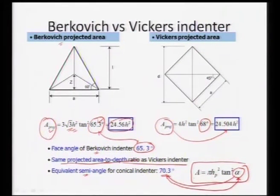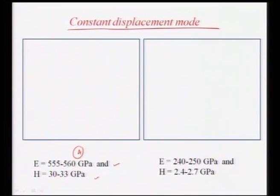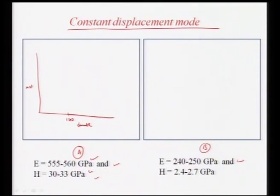To illustrate nano indentation, consider material A with much higher modulus and hardness, and material B with much lower modulus and hardness. Just by comparing, we can see how different a p-h curve we can obtain in these two cases. For example, with loads on the order of milli Newtons and displacements up to a couple of hundred nanometers, we can observe very different curves for the two materials.